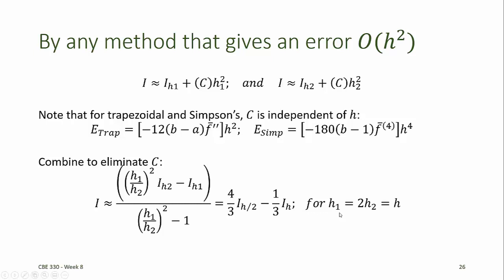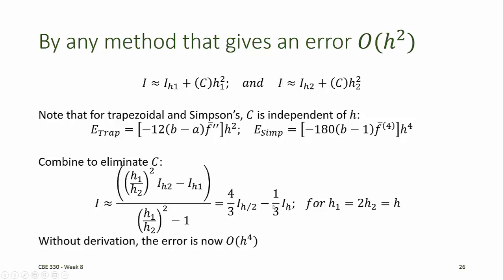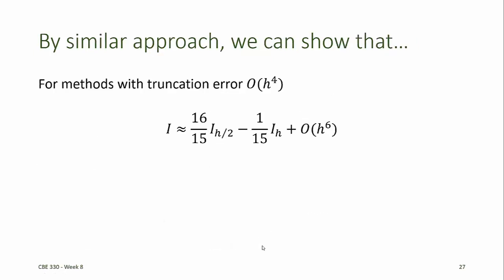If we use an h1 equal to 2 times h2 — that is, we cut the interval size in half when making the second estimate — then we combine the first and second estimates by taking 4/3 times the integral estimated with the smaller interval minus 1/3 times the integral estimated with the larger interval. That should eliminate c. Without showing the derivation, we can be assured that the error terms are now of order h to the fourth.